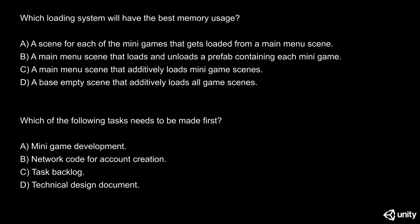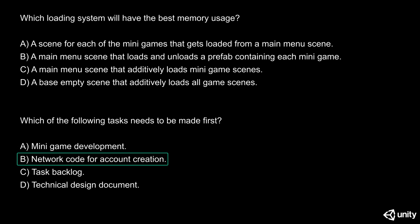Answer A says: minigame development. Although starting to code mechanics right at the beginning of a project is really fun, there are some considerations we have to take into account first. If we start with game programming, we might have to do some rework later in the development process, which wastes valuable resources. Answer B: network code for account creation. Often, online interaction can dictate how the flow of the game works and it is very important to deal with this type of task early on in the development process. But before that, we actually need to know how the systems we are going to use to complete these tasks work.